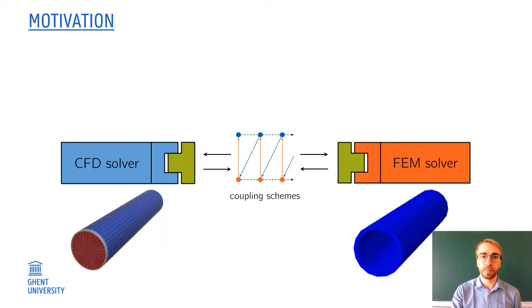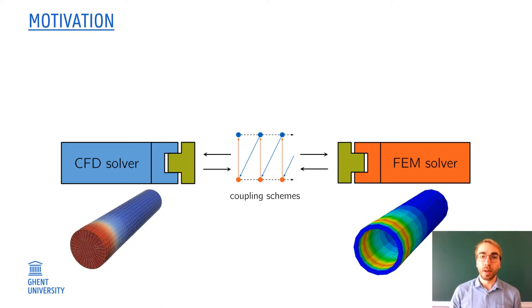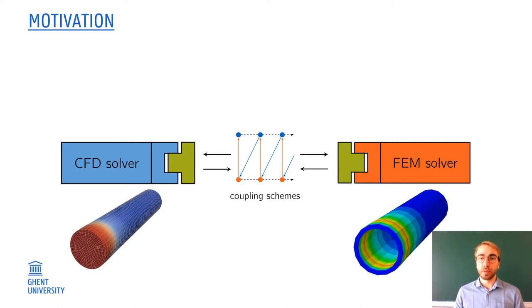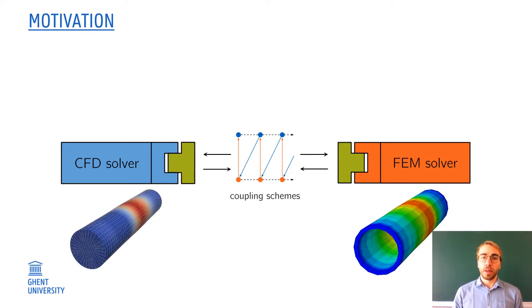So let's start with the motivation. If we consider two black box solvers, a CFD solver and a finite element solver, we need an equilibrium at the interfaces and this is achieved using a coupling scheme. If we consider the example which you can see here, which is a flexible tube with an incompressible liquid inside of it, where a pressure pulse is applied at the inlet, then the pressure pulse travels throughout the tube, resulting in deformation of the tube.